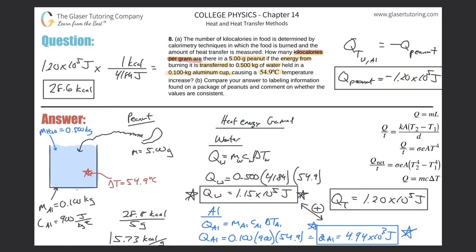So the answer is about 5.73 kcal/g. Remember, when you look at a food label it won't say 'kilocalorie per gram' — it will say 'Calorie,' which should technically be capitalized. Food calories are kilocalories, not regular calories. If you have peanuts at home, check the label: find the grams per serving and the Calories per serving, and you can calculate the kilocalories per gram yourself.